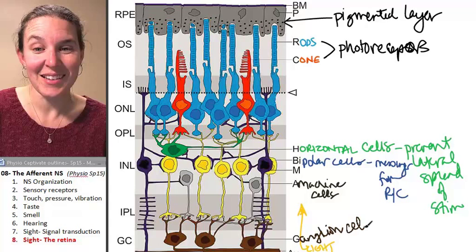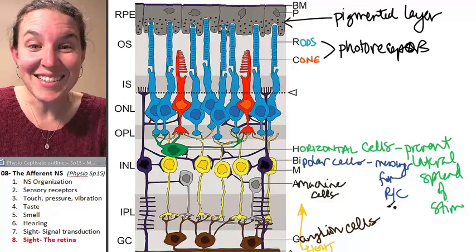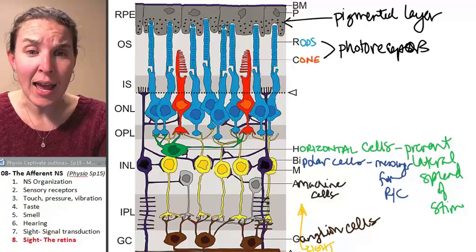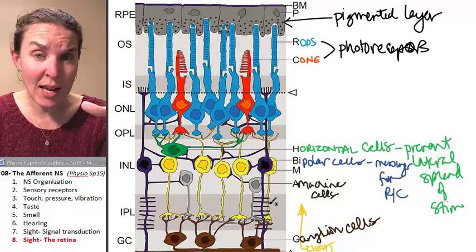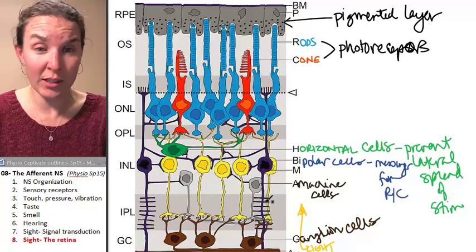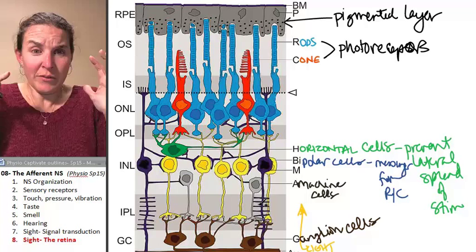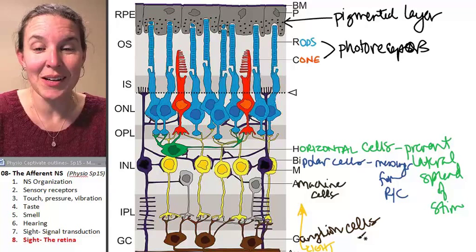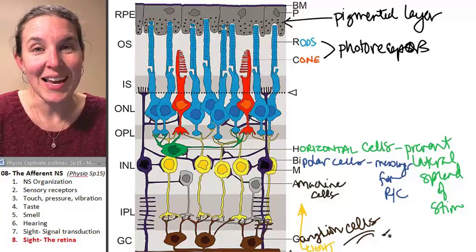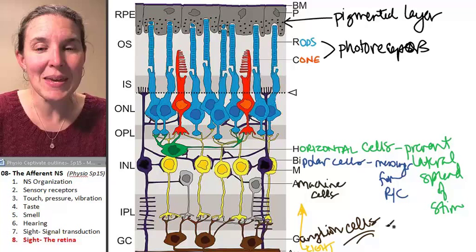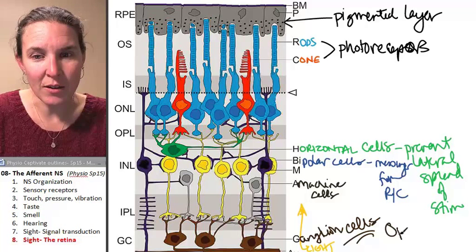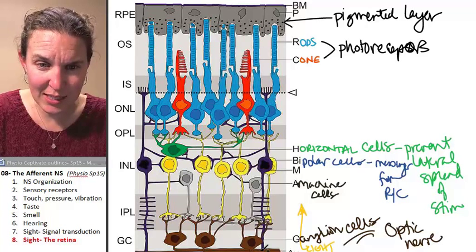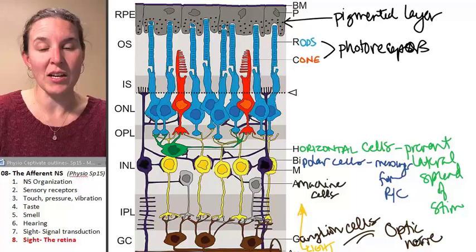And we have to know the ganglion cells. Because guess what? The ganglion cells, ultimately through all these layers of don't talk to that guy and go ahead and send your message and don't send that message and that message clearly is irrelevant, all of them putting in their little two cents, if the message gets through to the ganglion cells, these guys are who basically become the optic nerve. So if you look, you can't really see it down here at the bottom, but I just circled the optic nerve.